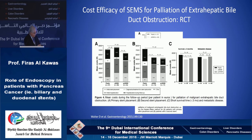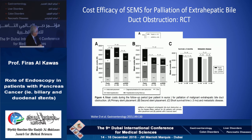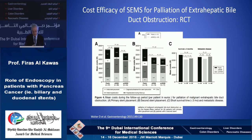A more recent meta-analysis again shows clearly that despite the higher initial cost of a metal stent, the overall cost is actually much better for patients receiving covered or uncovered metal stents compared to plastic stents — mainly because of repeated hospital admissions and failed stents. This holds true whether patients live more than or less than three months.